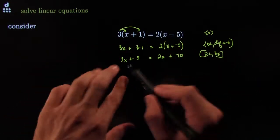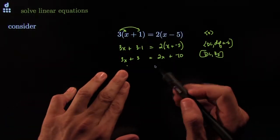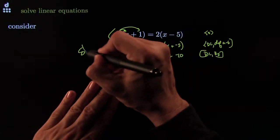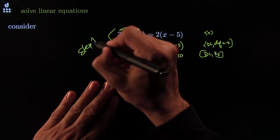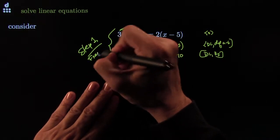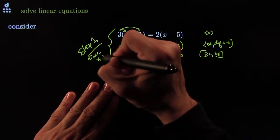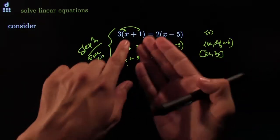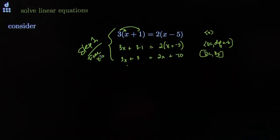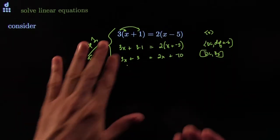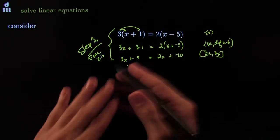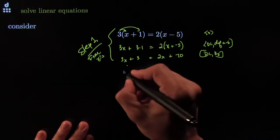See, they were trapped inside the parentheses — now they're free. This is step one: free the X's if they're trapped inside parentheses or in fractions. Free them so that now you can move things around.